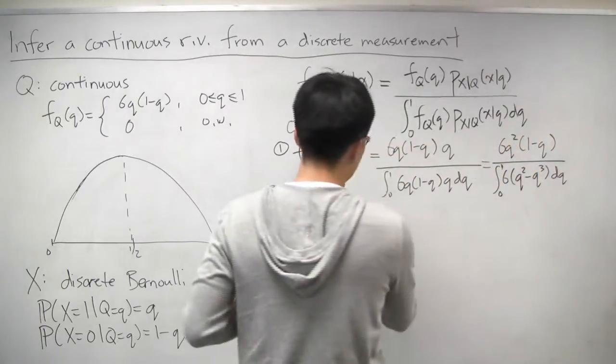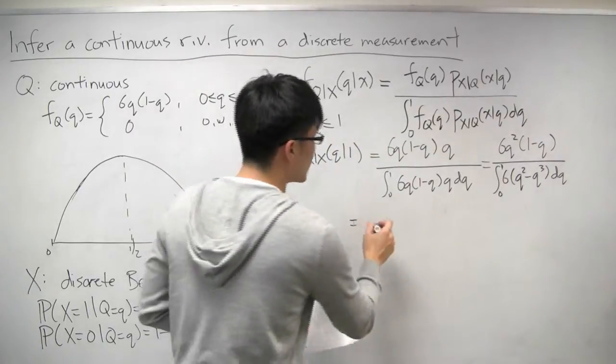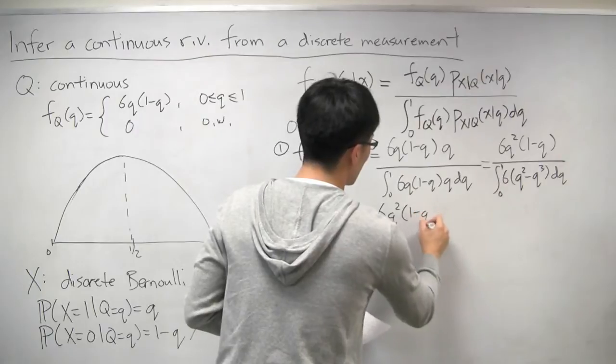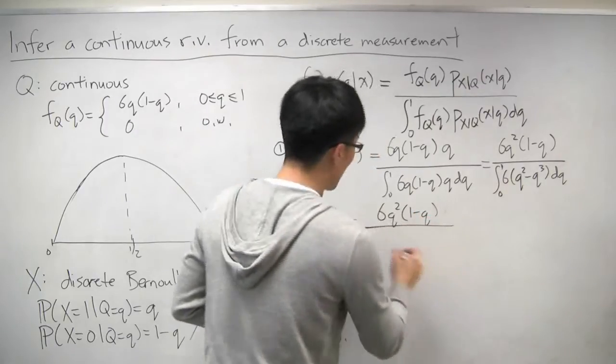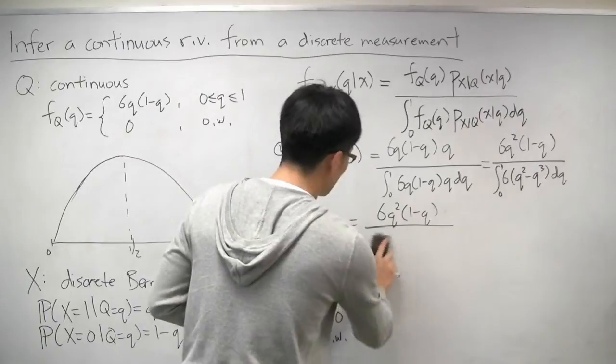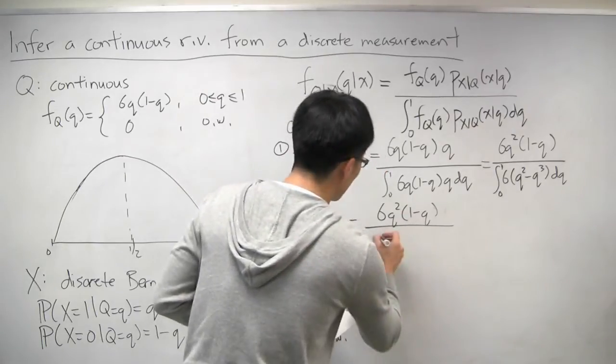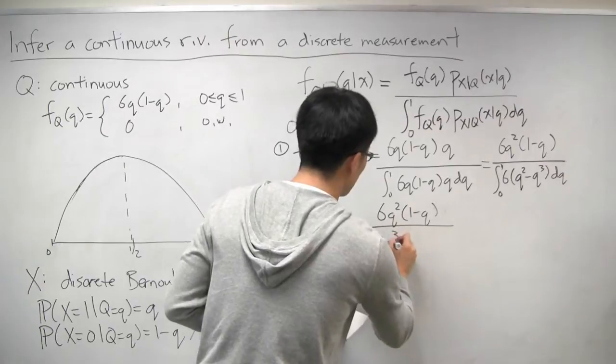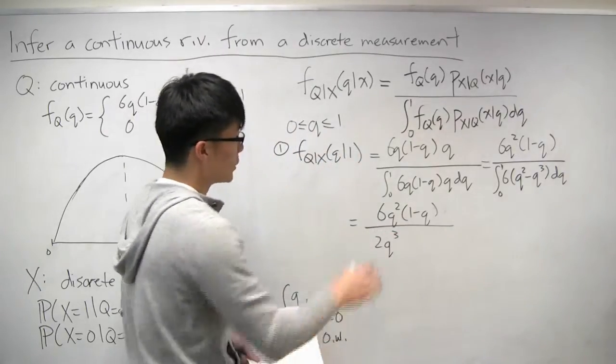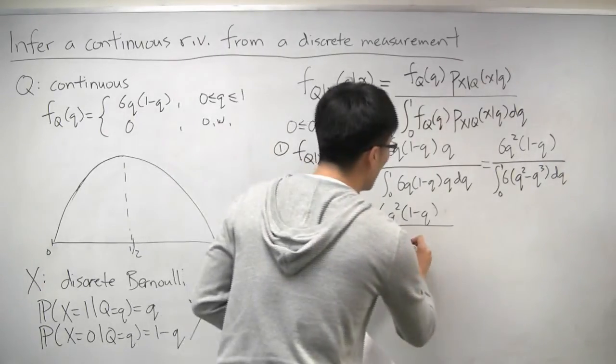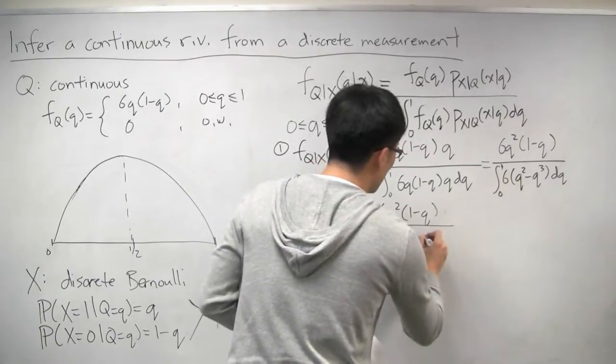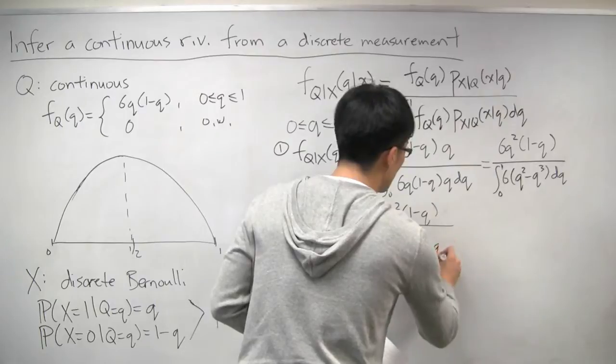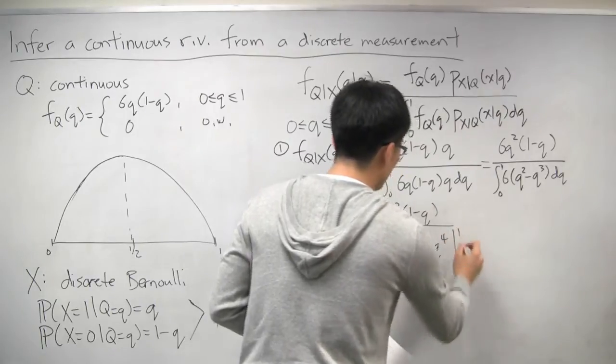And now this is just some calculus. So we still have the numerator, 6q squared times 1 minus q. The denominator, we have 6q squared, so 2q cubed. That would give us the 6q squared term minus 6 fourths q to the 4th. And we integrate that from 0 to 1.